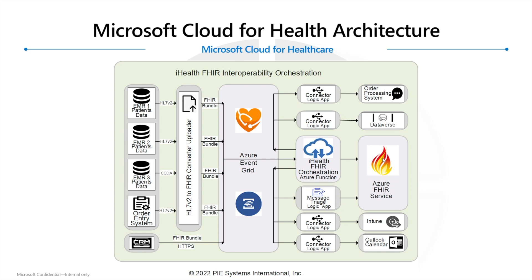For example, if a patient changes their phone number or address — demographic information — it will check whether the patient is already there, and if so, update just the information that needs updating. It can also trigger additional Logic App flows to, say, update that demographic information in Microsoft Dataverse, or maybe trigger an order processing workflow to mail a remote patient monitoring kit to a patient. But that's basically the flow.